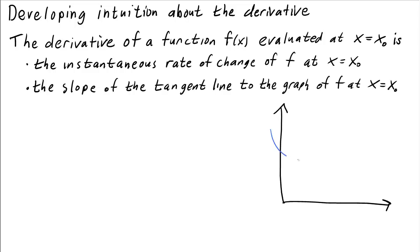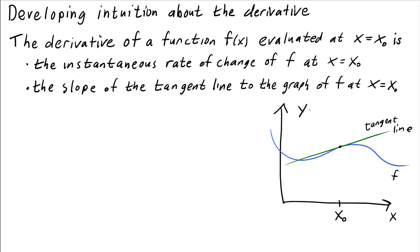If we draw the graph of f and draw a tangent line at x equals x0, and write the equation for the tangent line as y equals mx plus b, then this number m is the slope of the tangent line — so this m is exactly the derivative of f evaluated at x equals x0.